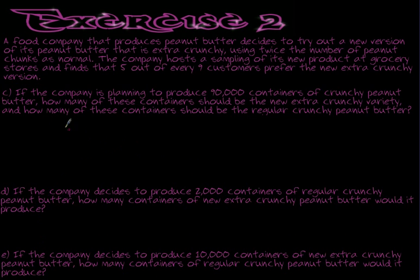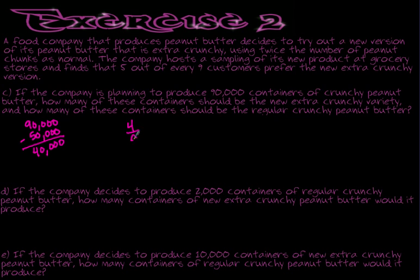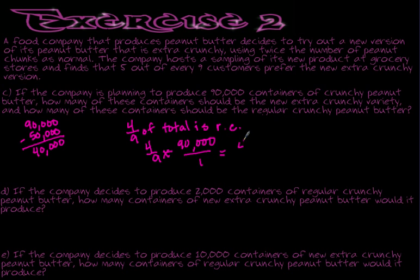Since I know I'm making 90,000 and 50,000 of them are extra crunchy, I know 40,000 of them would be the regular crunchy. I could also use the other value: 4 ninths of the total is regular crunchy — so 4 ninths times 90,000 also gives me 40,000. We'll work on this more in class. We're going to do another example together, and then you'll try one on your own.